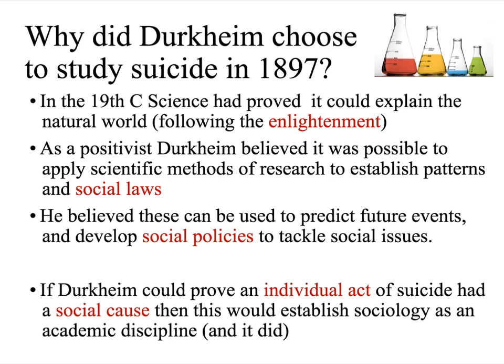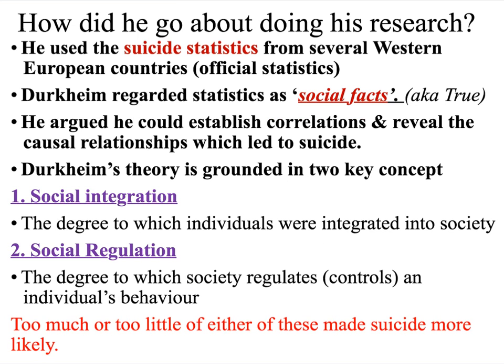If Durkheim could actually prove that the individual act of suicide had a social cause, he believed — and his teacher Comte believed — that this would establish sociology as an academic discipline. And ultimately, no matter the strengths and weaknesses of his research, it really did establish sociology as an academic discipline that people took seriously. So, how did he actually go about doing his research? Well, he was a positivist, so one of the most positivist research methods is the use of statistics.